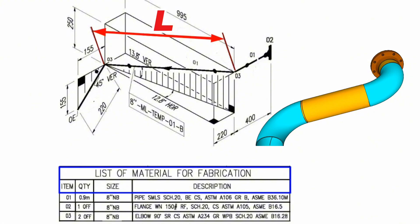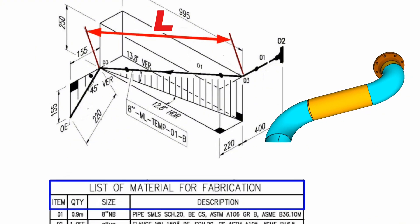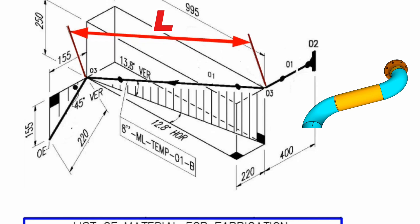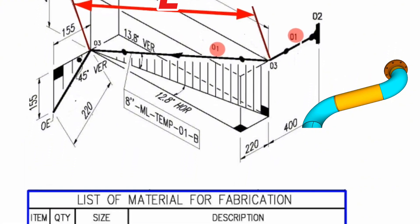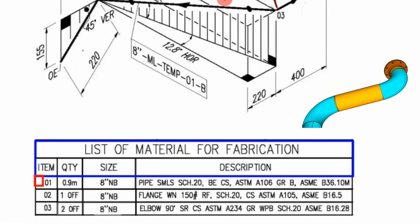Let's start learning the materials used in this pipeline. Item number 1 has been used in several places of the pipeline. The item number 1 quantity is 0.9 meters, size 8-inch pipe, seamless, schedule 20, carbon steel, ASTM A106, grade B, ASME B36.10M.